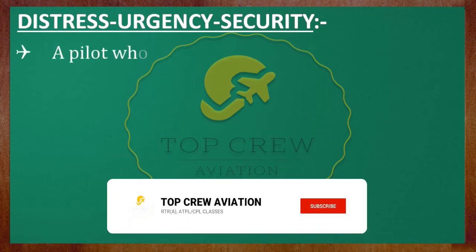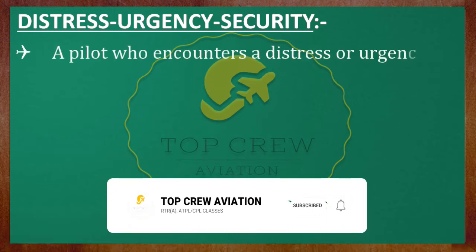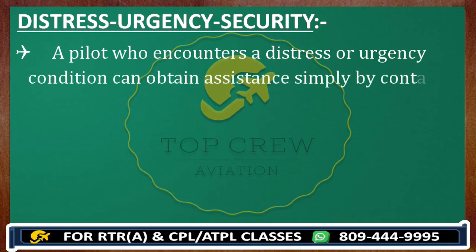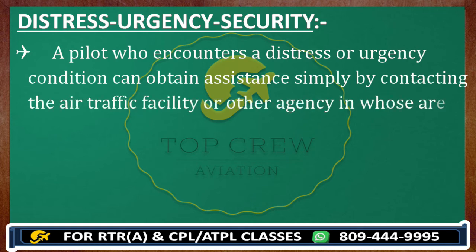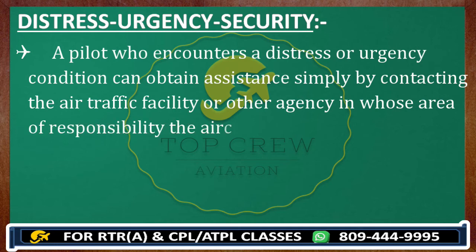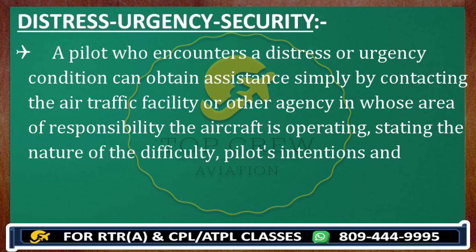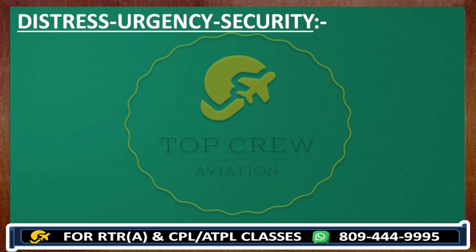A pilot who encounters a distress or urgency condition can obtain assistance simply by contacting the air traffic facility or other agency in whose area of responsibility the aircraft is operating, stating the nature of the difficulty, the pilot's intention, and the assistance desired. Wherever the situation arises, it would be dealt with by the concerned authority in that area.